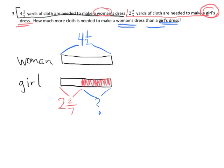And so the question says, how much more cloth is needed to make a woman's dress than a girl's dress? So the question is asking right here, how much is this piece? We're going to use subtraction to get that. This is a classic example of a tape diagram that just begs for subtraction to be the solution technique. So we see that our common denominator, our common unit, is going to be 14.